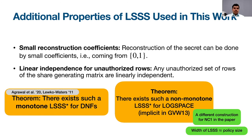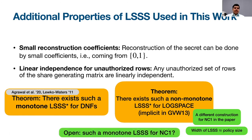We use both non-monotone and monotone LSSS in this work. One open problem is how to obtain a monotone LSSS with the two required properties for policy classes beyond DNFs, such as NC1 or more. The only reason our MA-ABE is for DNFs is that we currently lack a monotone LSSS with these properties for classes beyond DNFs. If such a scheme is found in the future, our MA-ABE would directly translate to that policy class.